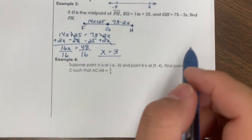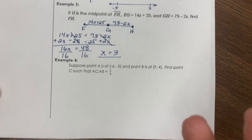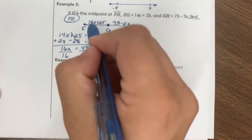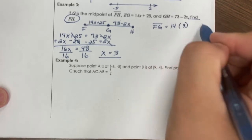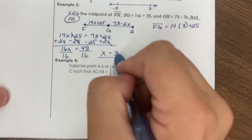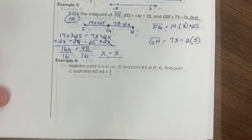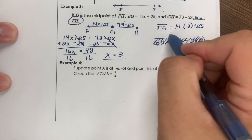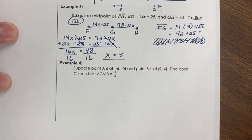And again, this is going to happen to a lot of students — please make sure that you read the question. Sure, we got our x value, and a lot of times back in the day when you were in algebra, that was good enough. But when you read the question here, they're asking you to find FH. So if you want to know the value of FH, you're going to go ahead and plug in 3 into the whole thing. I'm going to plug in 3 into this x for FG and get 14 times 3 plus 25. And then I'm going to plug in 3 into GH as well and get 73 minus 2 times 3.